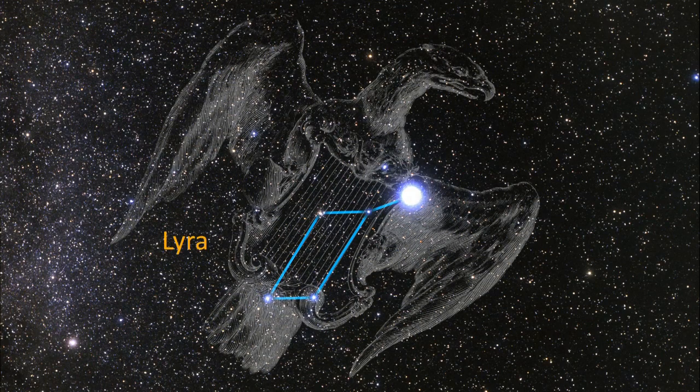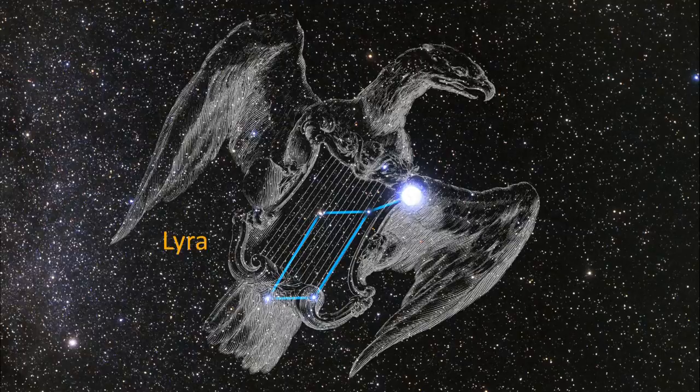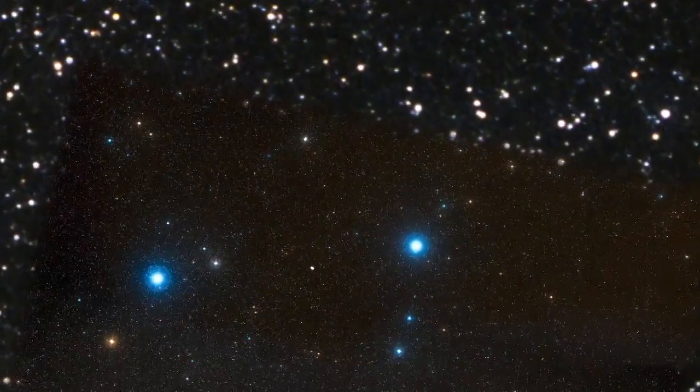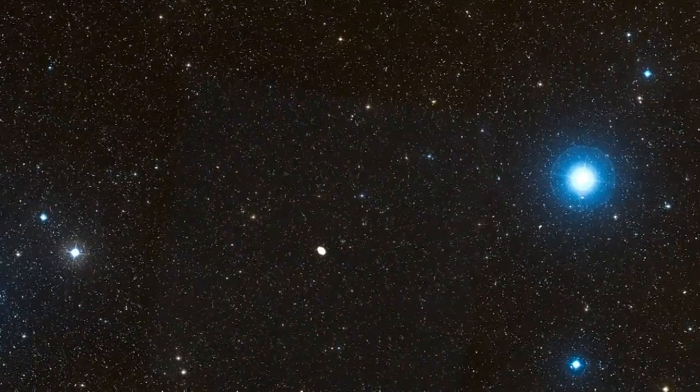The iconic ring nebula lies in the summer constellation Lyra. This glowing ring of gas is the result of the death of a sun-like star.